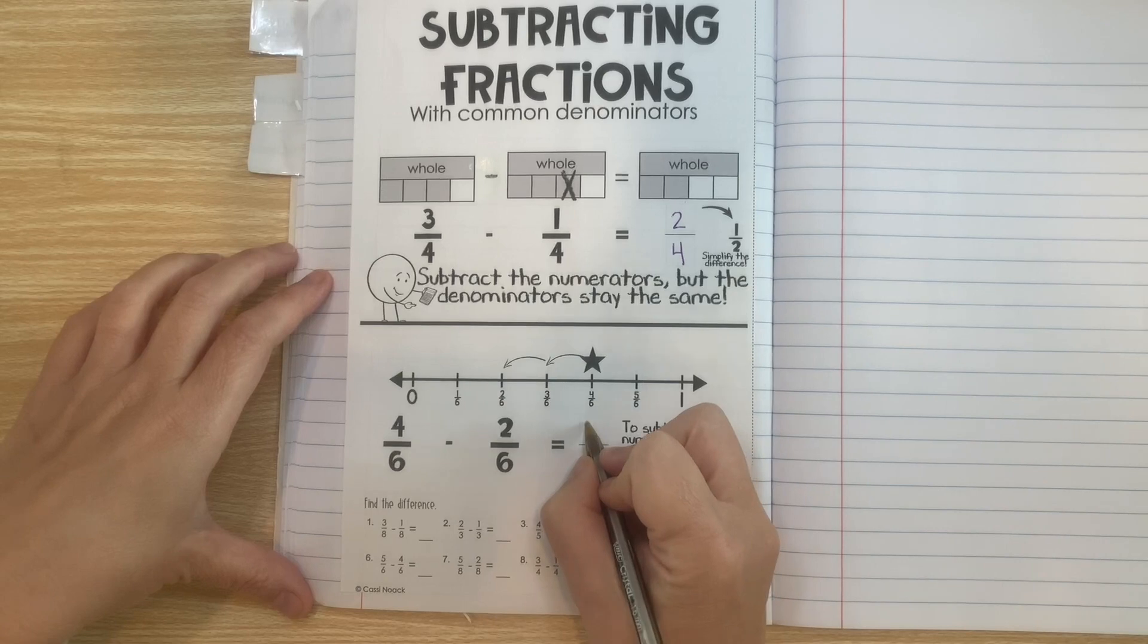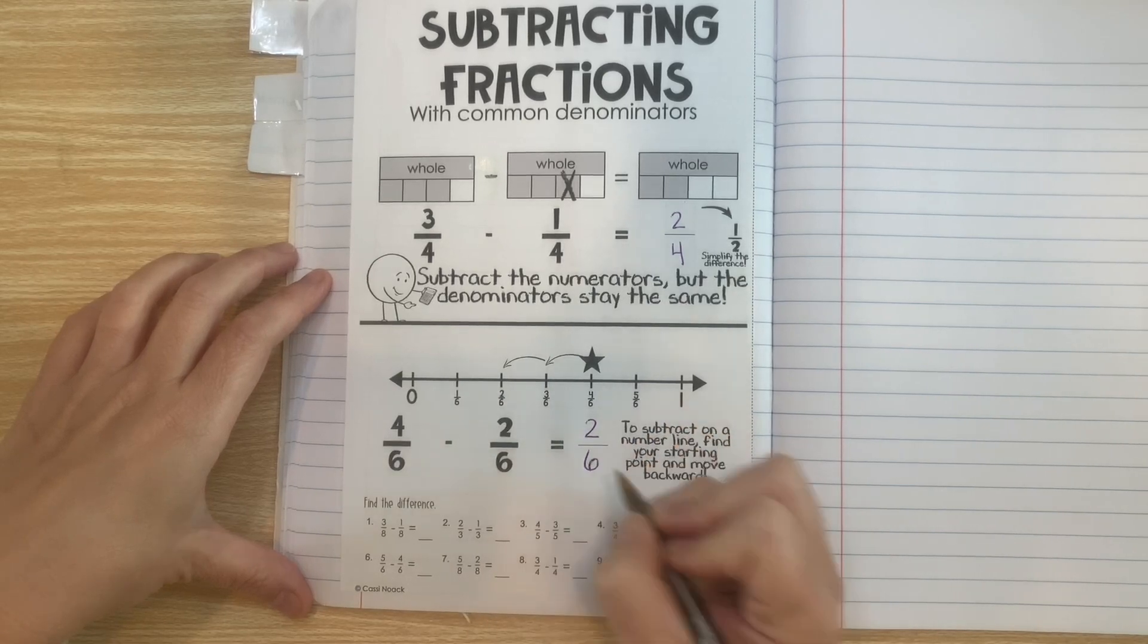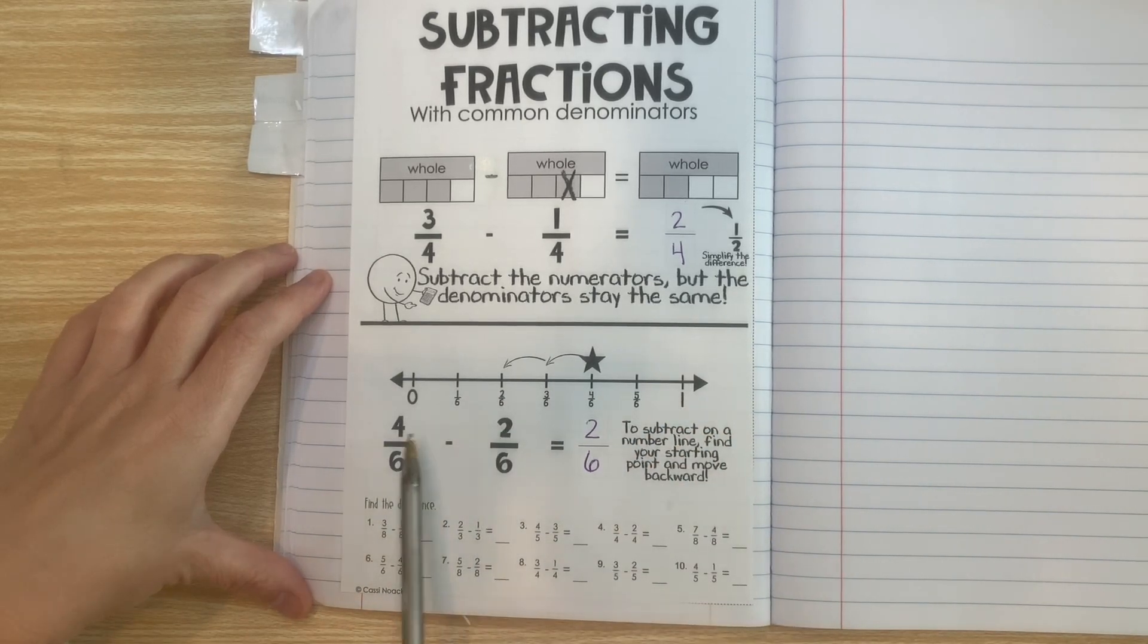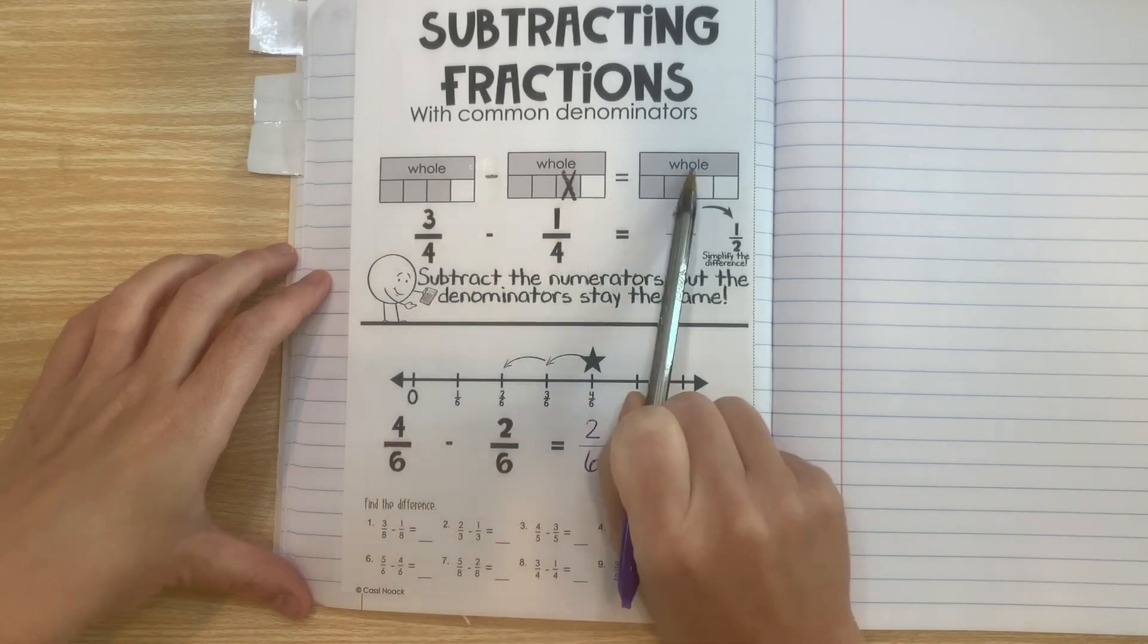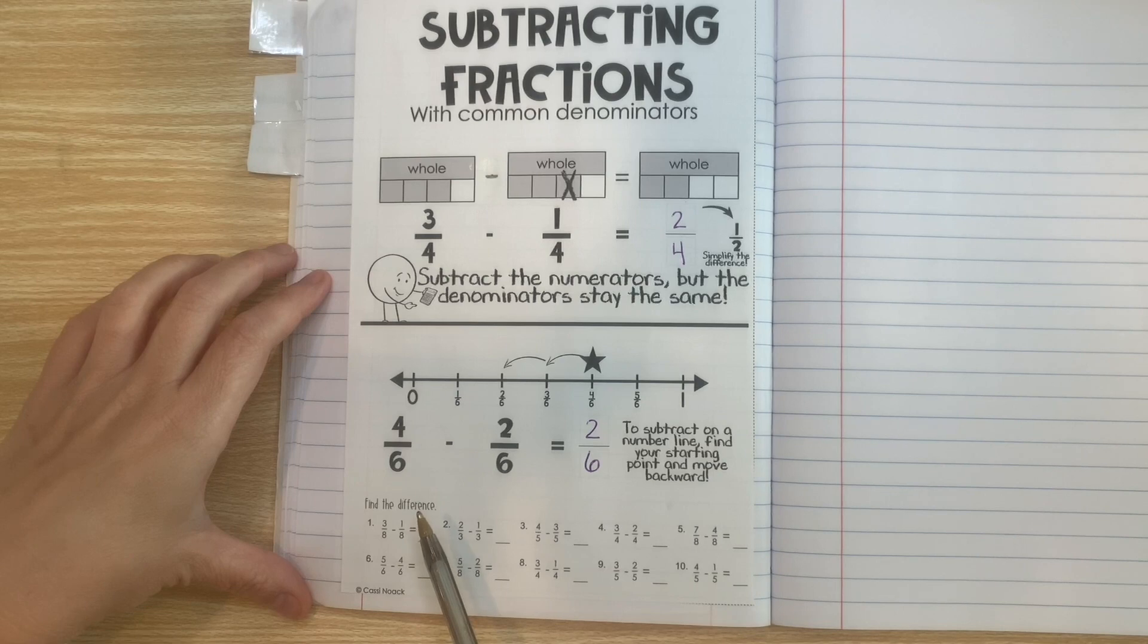So our difference is going to be 2 sixths. Now if we were to look at this we can see that 4 minus 2 is 2 and the denominator stays the same. So whether you have a model or not you can still do math the same way.